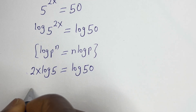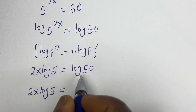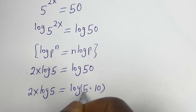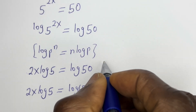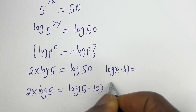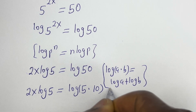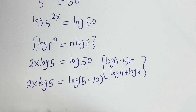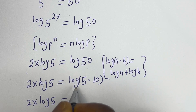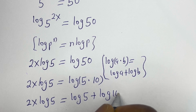Then this can be written as 2s log 5 is equal to log 50. Log 50 can be written as log of 5 multiplied by 10. Take note that if you have log of a multiplied by b, this is equal to log a plus log b.